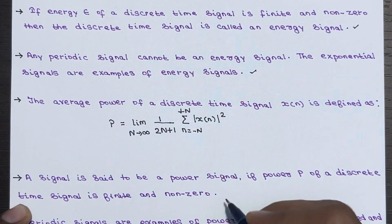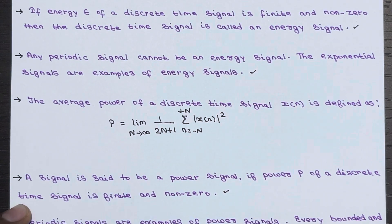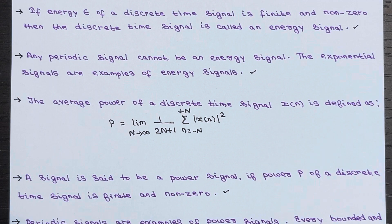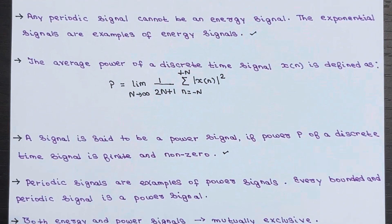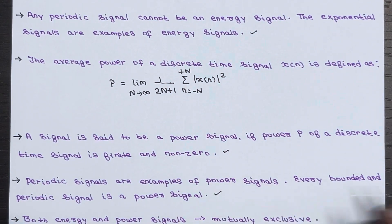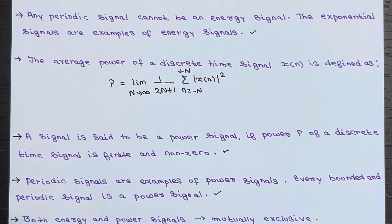When a discrete-time signal has finite and non-zero power P, then it is referred to as a power signal. A great example of a power signal is a periodic signal. In fact, any bounded and periodic signal can be classified as a power signal.